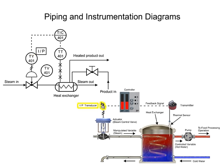The transducer converts an electronic signal to a pressure signal and is indicated by the square containing the letters I and P. The line with diagonal marks designates a pneumatic connection.